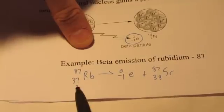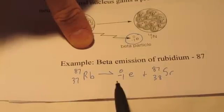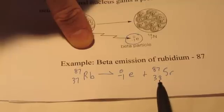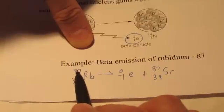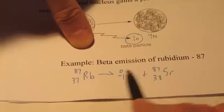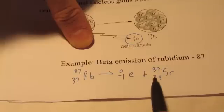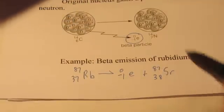An easy way to check your work is just make sure the bottom numbers on each side of your nuclear equation balance. So does 37 on the left side equal negative one plus 38? It does. Does 87 for a mass number on the left side equal zero plus 87 on the right? And obviously it does. Now you'll have some of these to do on your homework tonight.